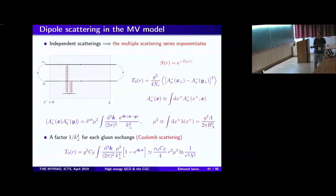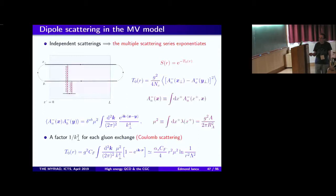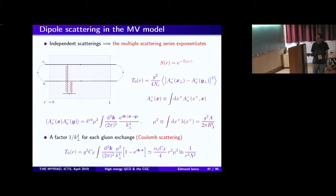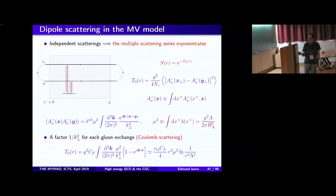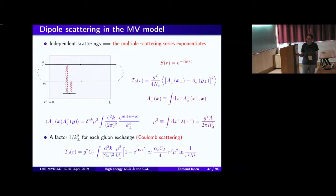Given the solution to the Poisson equation and the correlators of rho, it is straightforward to compute the correlators of A at x-perp and y-perp. We get a delta function in color and a product of two Coulomb propagators. Each A-minus is the inverse of a Coulomb propagator — one over k-perp squared in momentum space. With two exchanges, we get one over k-perp to the fourth, Fourier-transformed to x minus y. The scale mu-squared is the color charge squared integrated over x-plus from 0 to L — color charge squared per unit transverse area — the fundamental parameter of the MV model.